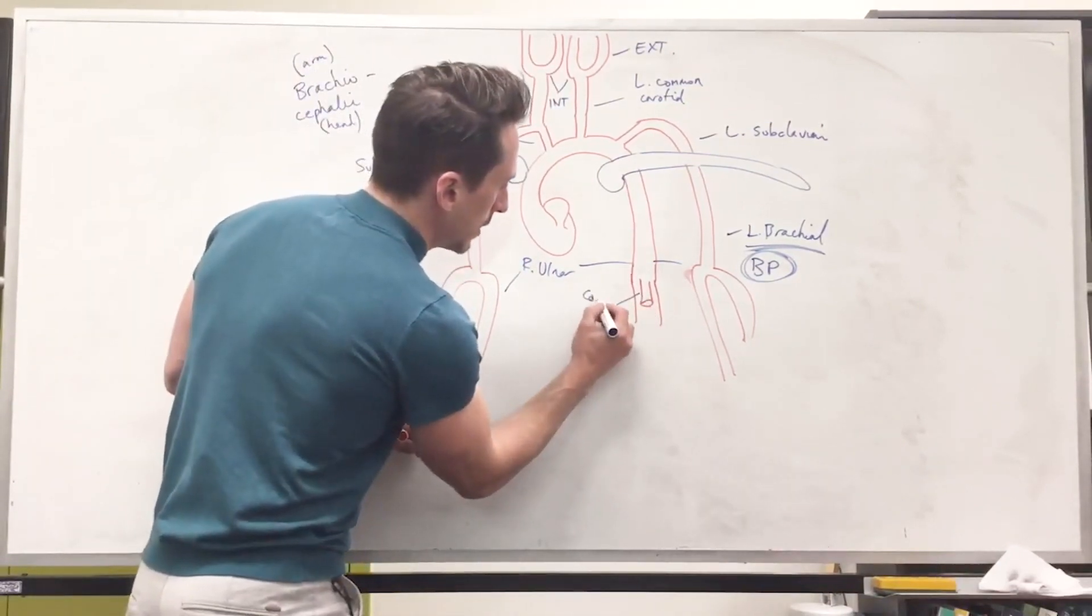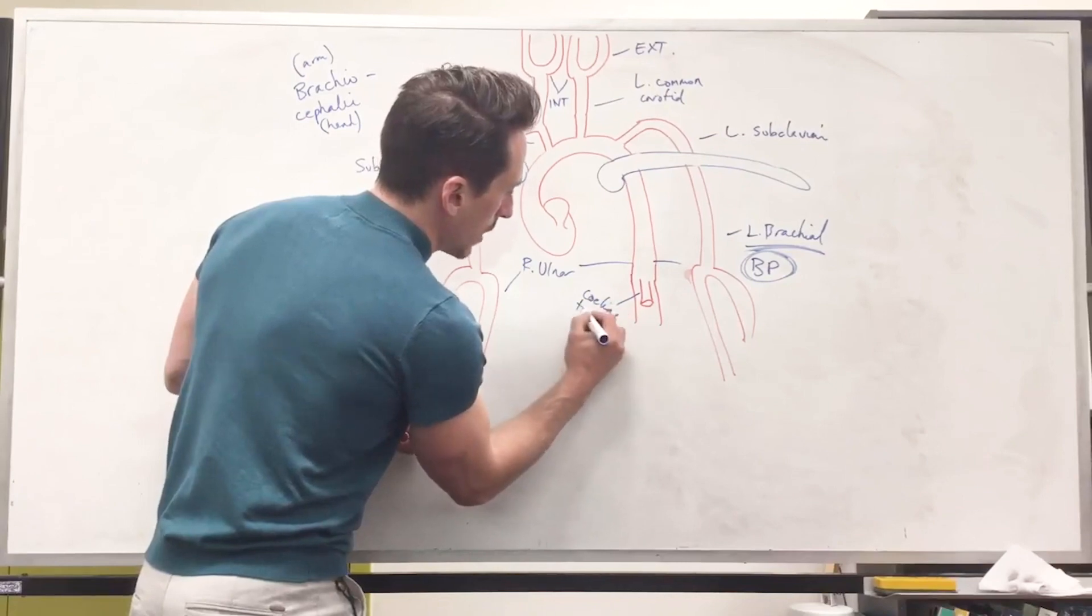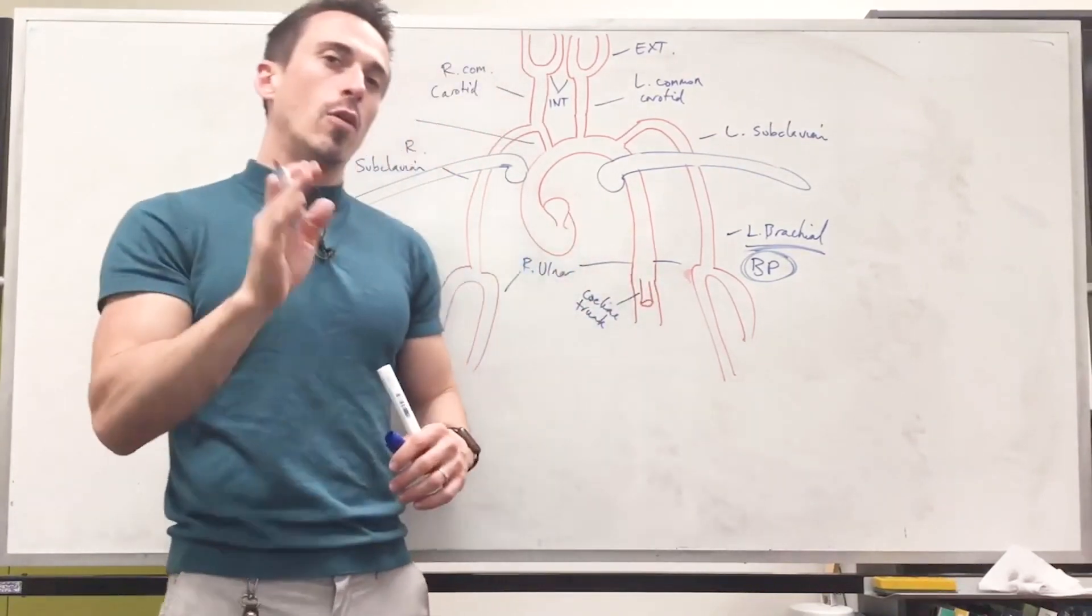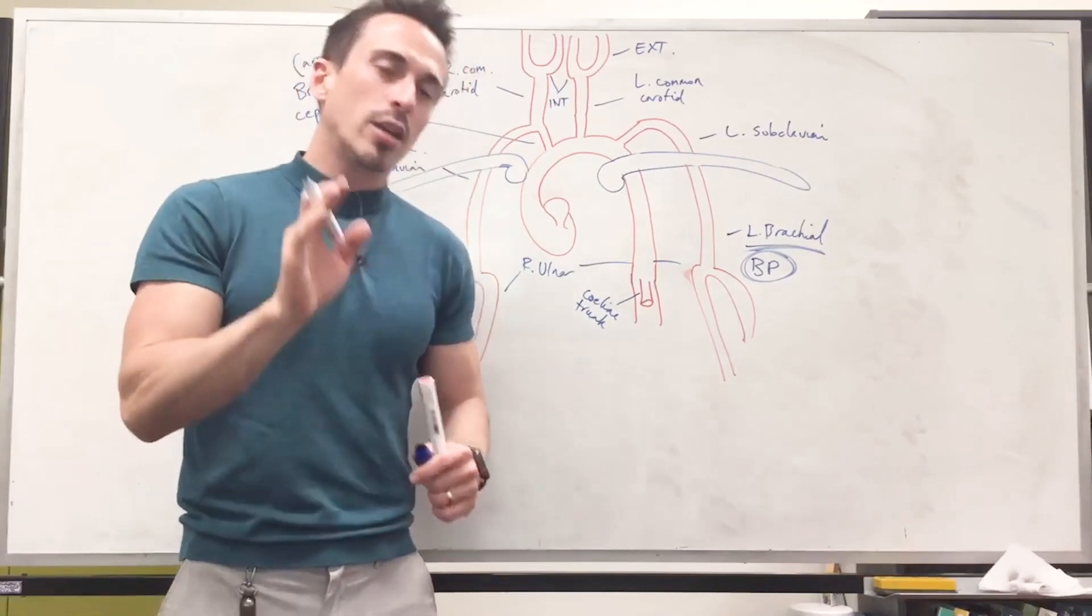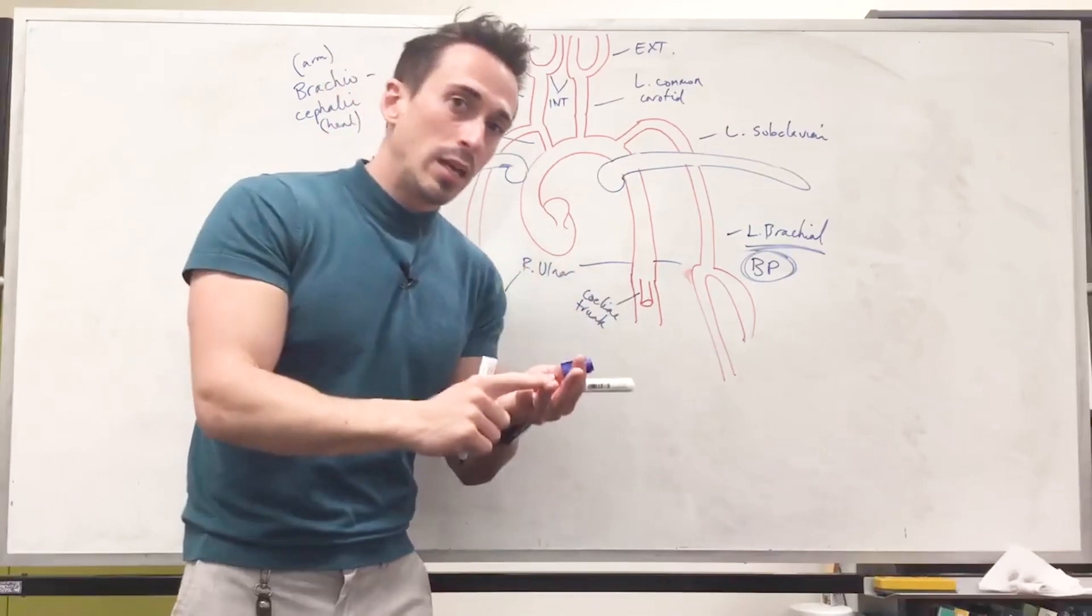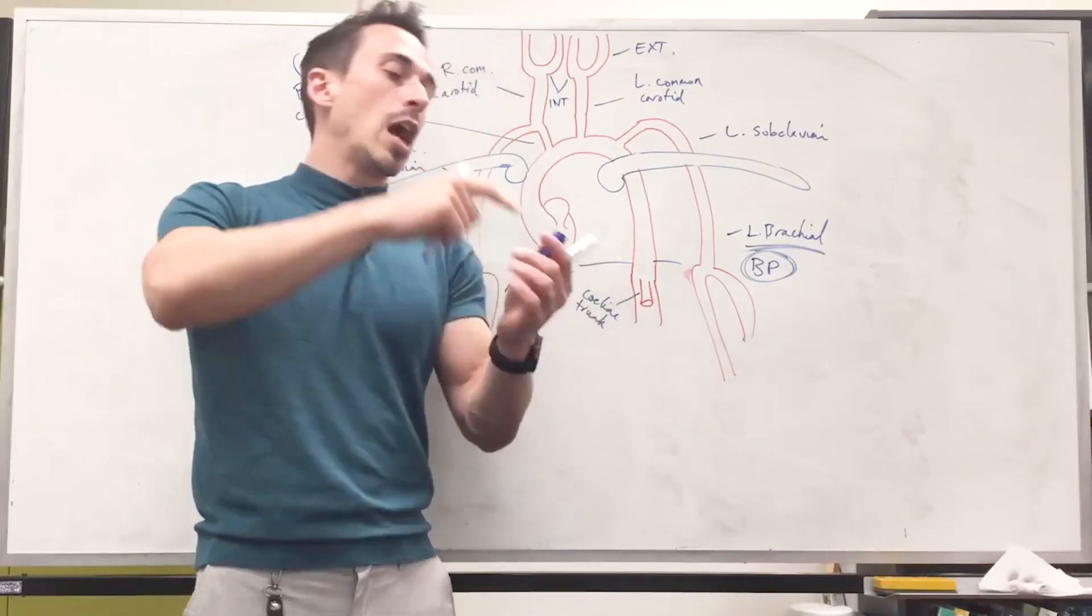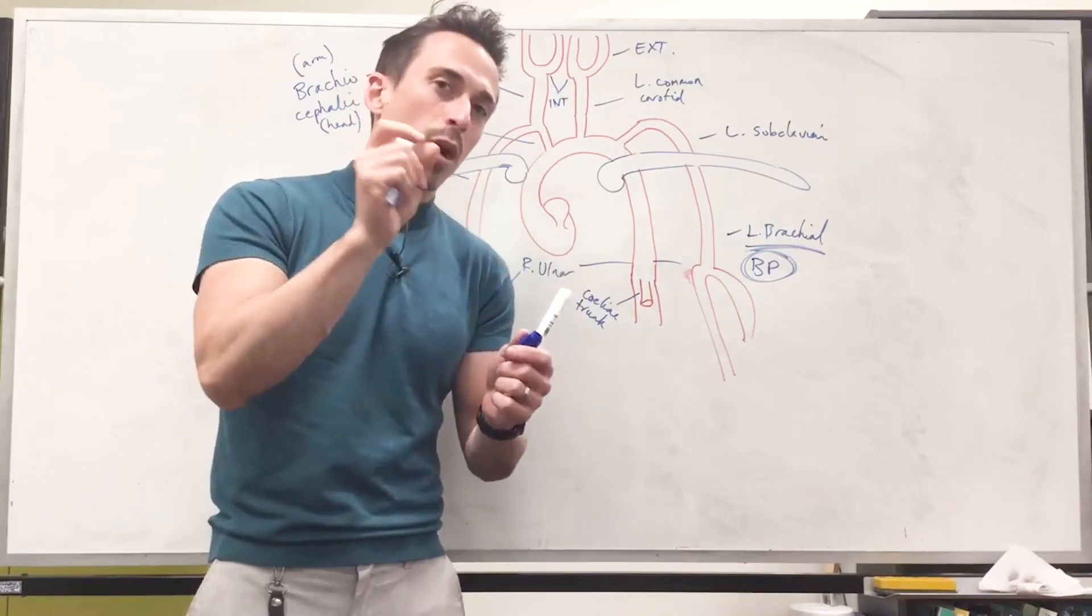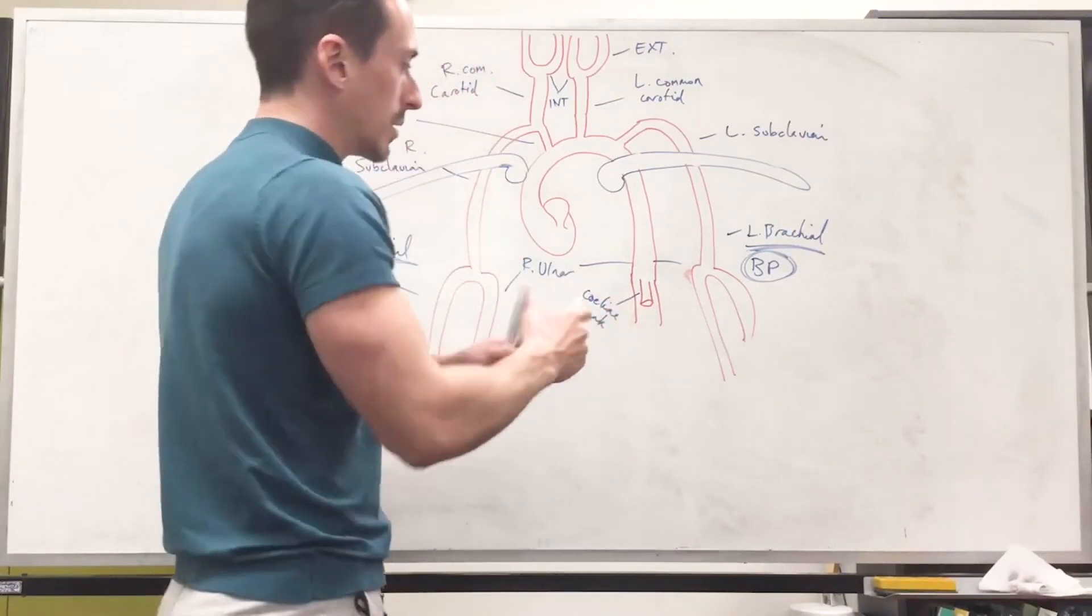Now, this is the celiac trunk, and the celiac trunk has three branches that come off, which I've done a video on. These branches are going to feed the liver, the stomach, the spleen, the pancreas, the lowest part of the esophagus, and a very minor part of the small intestines. That's what the celiac trunk does.